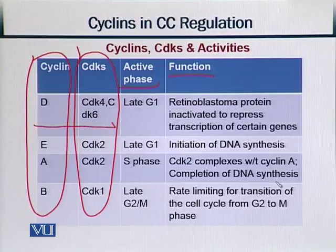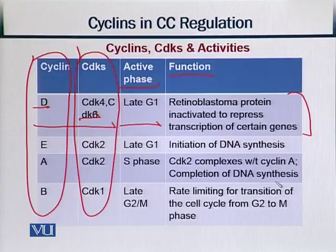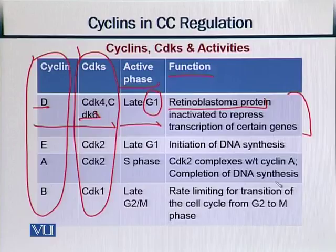Each row shows a cyclin-CDK partnership, the phase in which they work, and the advantage or function they perform. For example, Cyclin D works with CDK4 and CDK6 in the later part of G1, which is the pre-synthetic phase. Its function involves the retinoblastoma protein, represented as Rb, which is inactivated to repress transcription of certain genes.